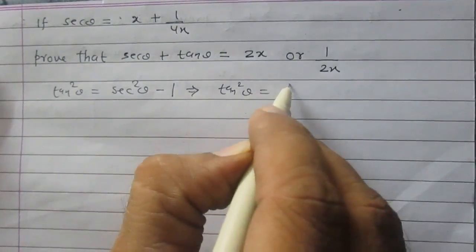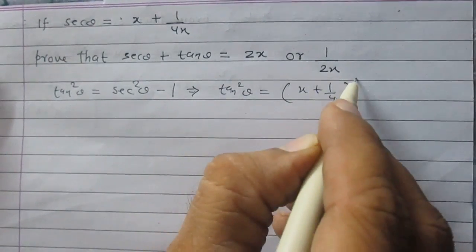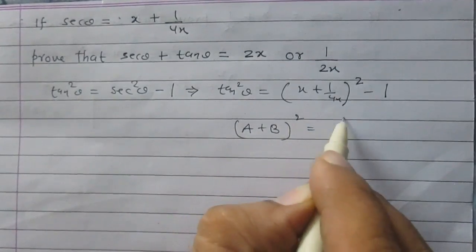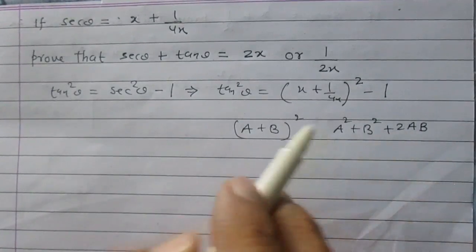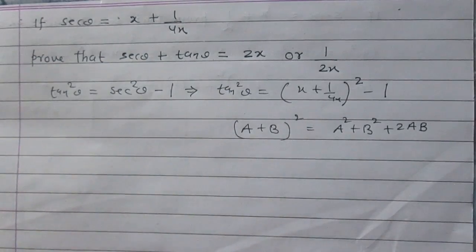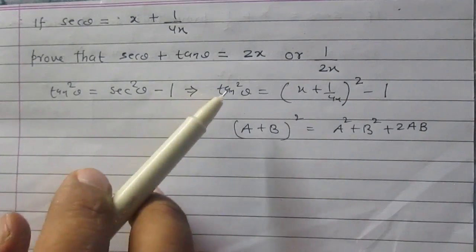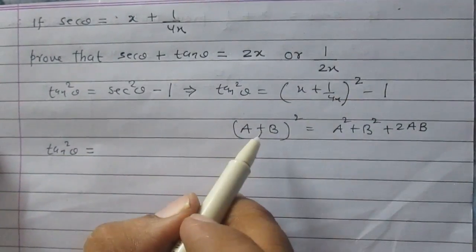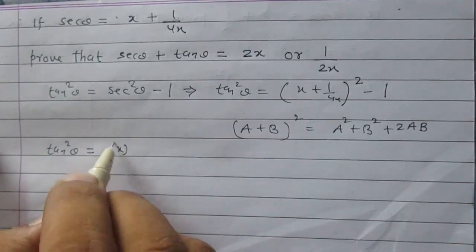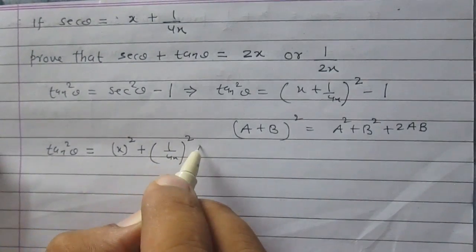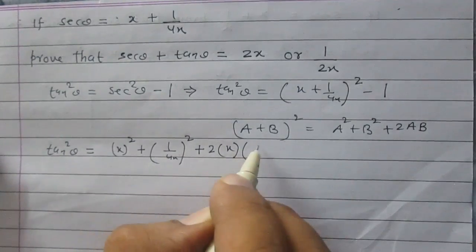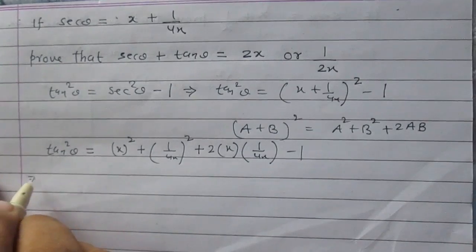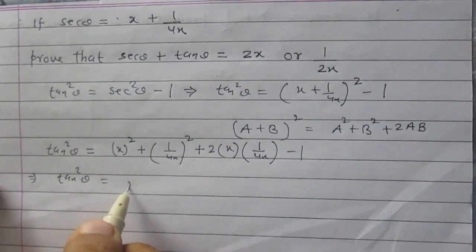On doing so, tan² θ is equal to x plus 1 upon 4x, whole square, minus 1. Now using the identity a plus b whole square equals a² plus b² plus 2ab, where a stands for x and b stands for 1 upon 4x, we can expand x plus 1 upon 4x squared. So tan² θ equals a² plus b² plus 2ab, then minus 1.